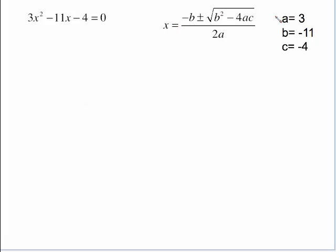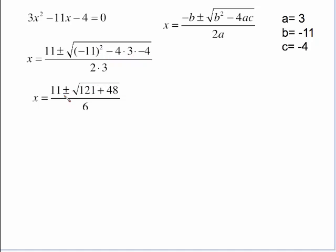Another example. Here's our a is 3, b is negative 11, c is negative 4. Plug those in and we have negative of negative 11 which is how I get positive 11 in the front. This is negative 11 quantity squared. Minus 4 times 3 times negative 4. That's 11.